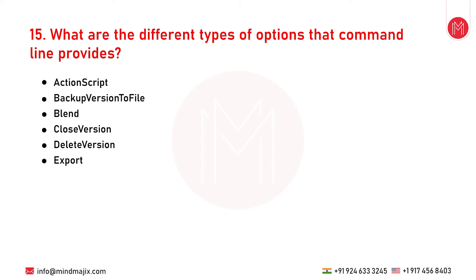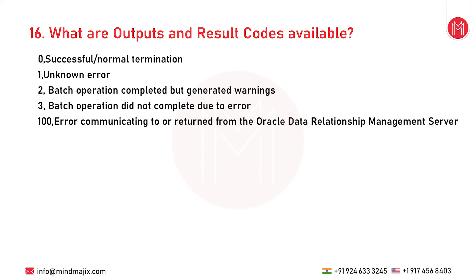The next question is: what are the different options that the command line provides? The command line provides various options such as: Action Script, Backup Version to File, Blend, Close Version, Delete Version, Export, Import, Multiple Open Version, Refresh Version, Request, and Restore Version from File.